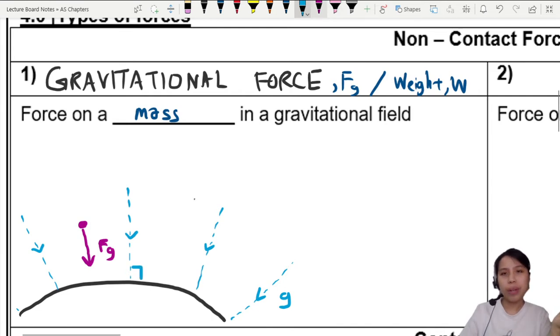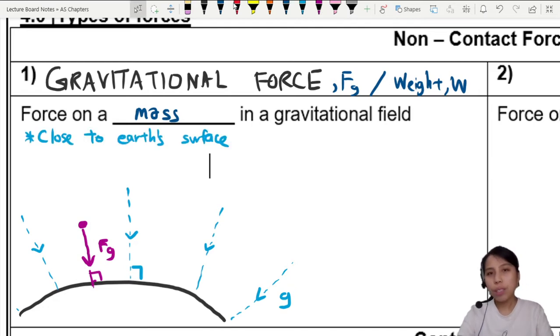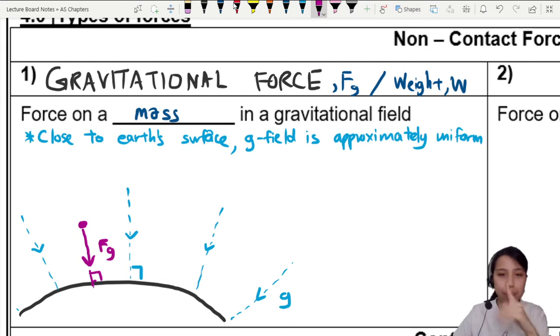You can say the FG is also always perpendicular to the surface of the earth because close to the Earth's surface the field is roughly uniform and perpendicular to the surface.